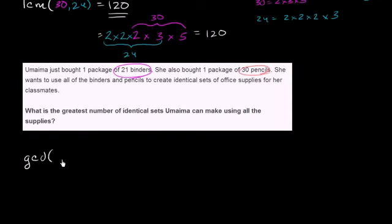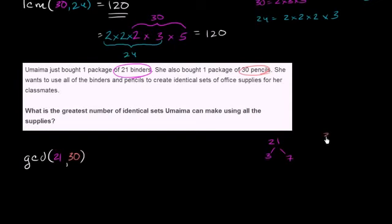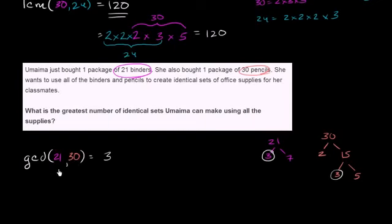Let's find the greatest common divisor — or greatest common factor — of 21 and 30. What's the largest number that divides into both? Using prime factorization: 21 is 3 times 7, both prime. 30 is 2 times 15, and 15 is 3 times 5, so 30 equals 2 times 3 times 5. The largest set of prime factors common to both factorizations is just 3. So the greatest common divisor is 3, meaning we can divide both numbers into 3 groups, giving us the largest number of identical sets.